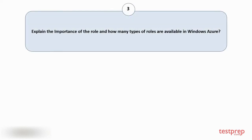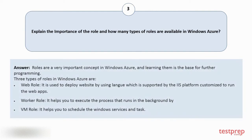Question number three: explain the importance of roles and how many types of roles are available in Windows Azure? Your answer is: roles are a very important concept in Windows Azure, and learning them is the base for further programming. Three types of roles in Windows Azure are: one, web role — used to deploy websites supported by the IIS platform, customized to run web apps; two, worker role — helps you execute processes that run in the background; three, VM role — helps you schedule Windows services and tasks.